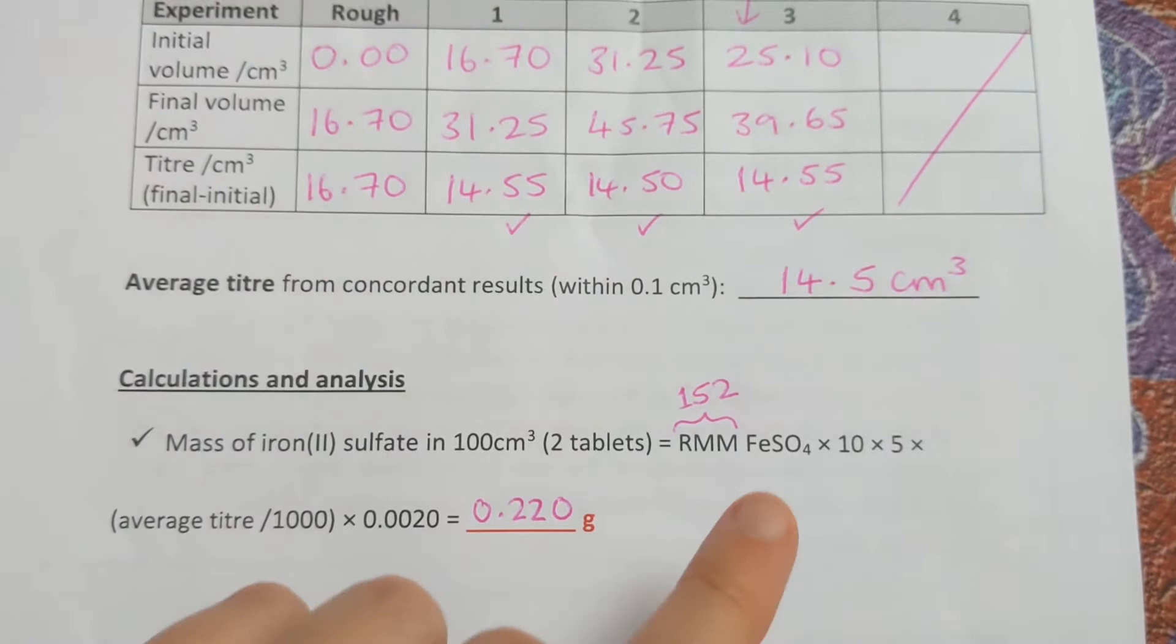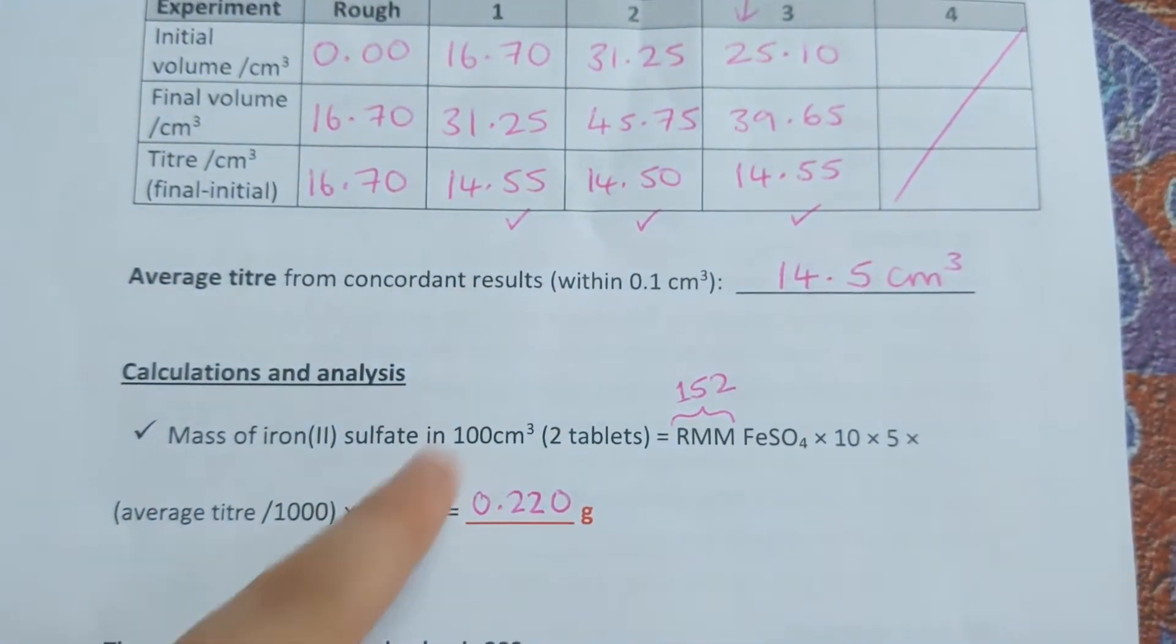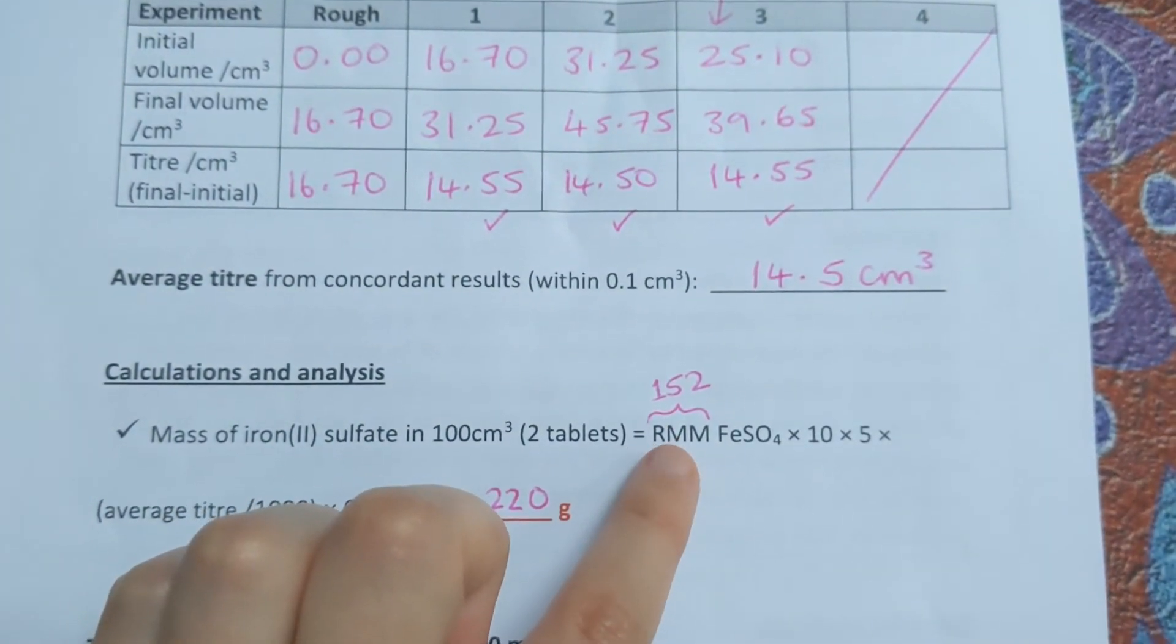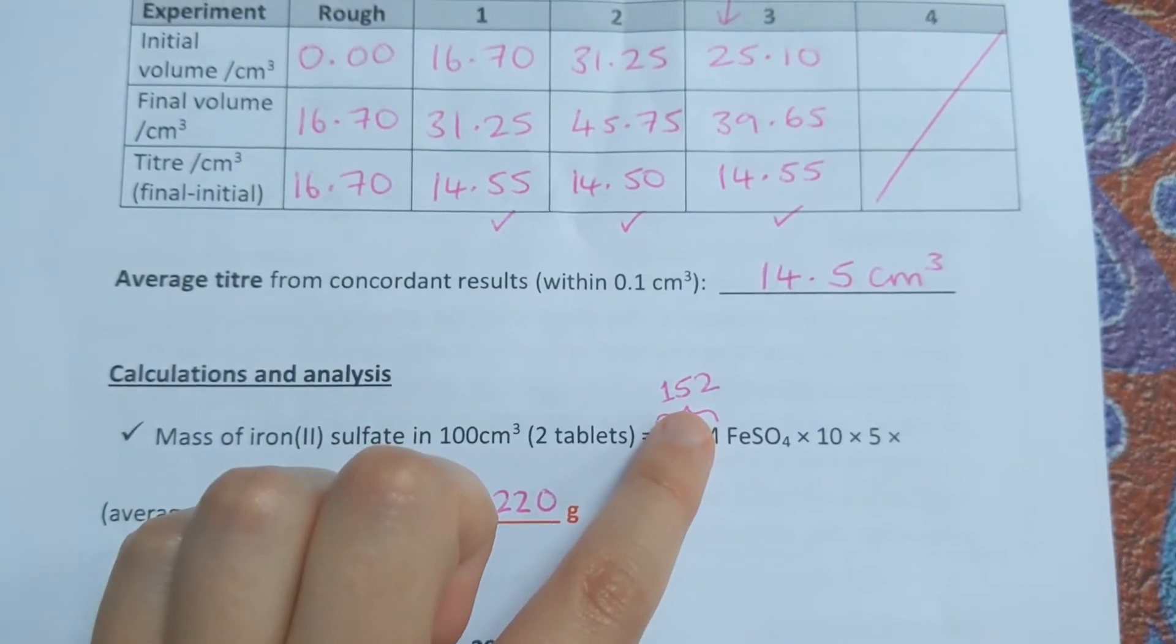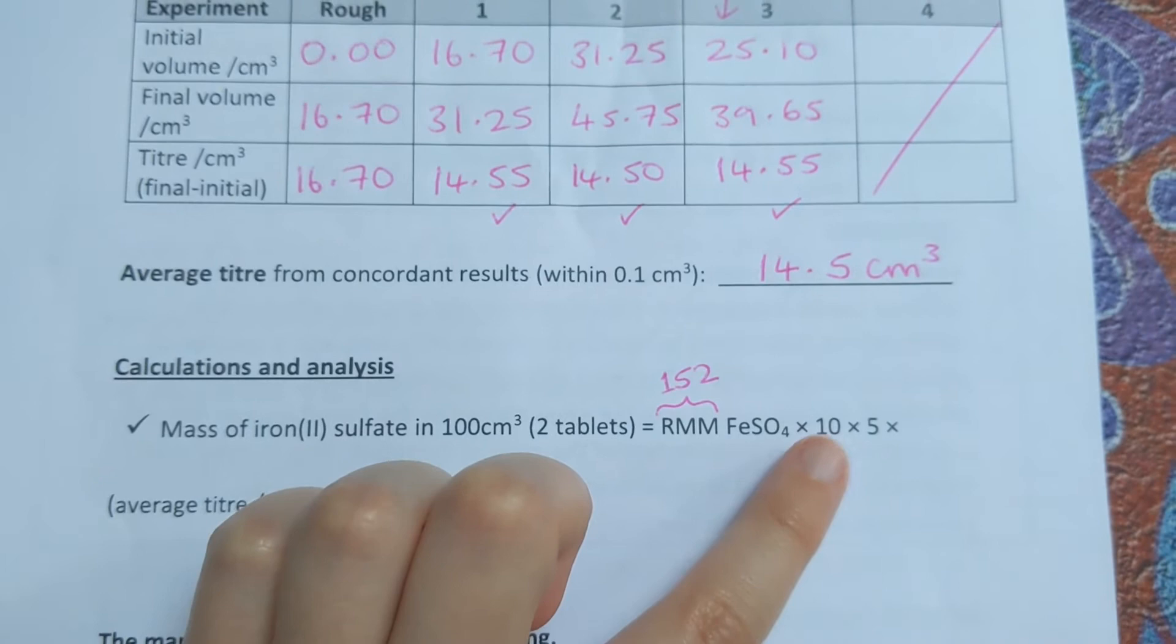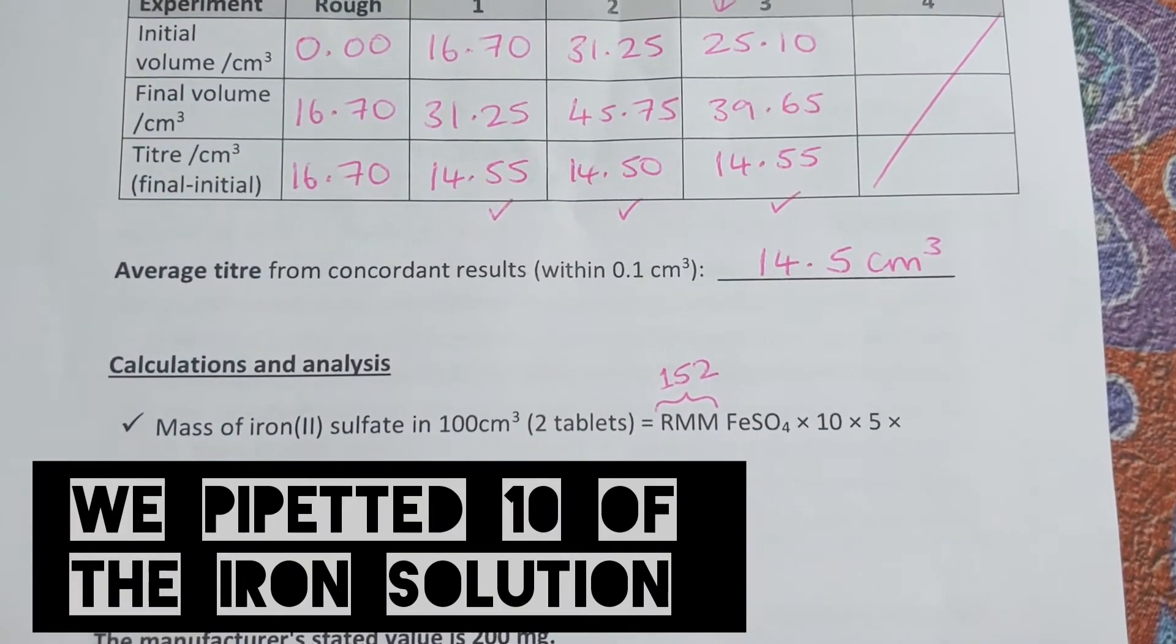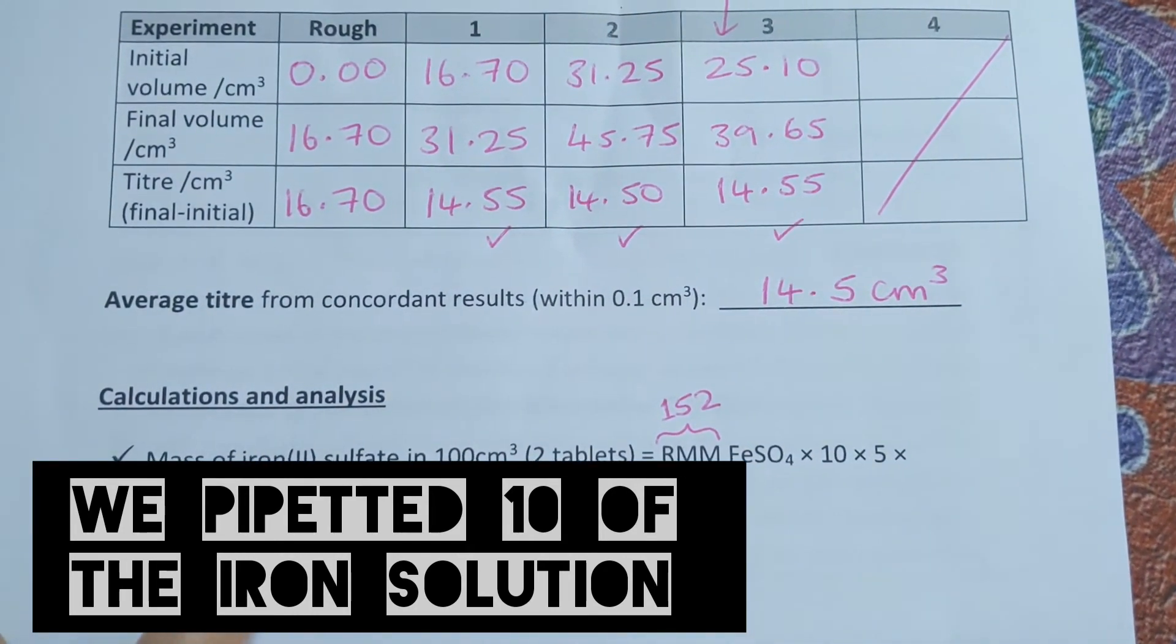To work out the mass of iron sulfate from the tablets in this volume, what we do is take the relative molecular mass of iron sulfate, which is 152, times 10. The reason we times it by 10 is because if we look at the method, we pipetted 10 cm³ of the iron solution into the conical flask.